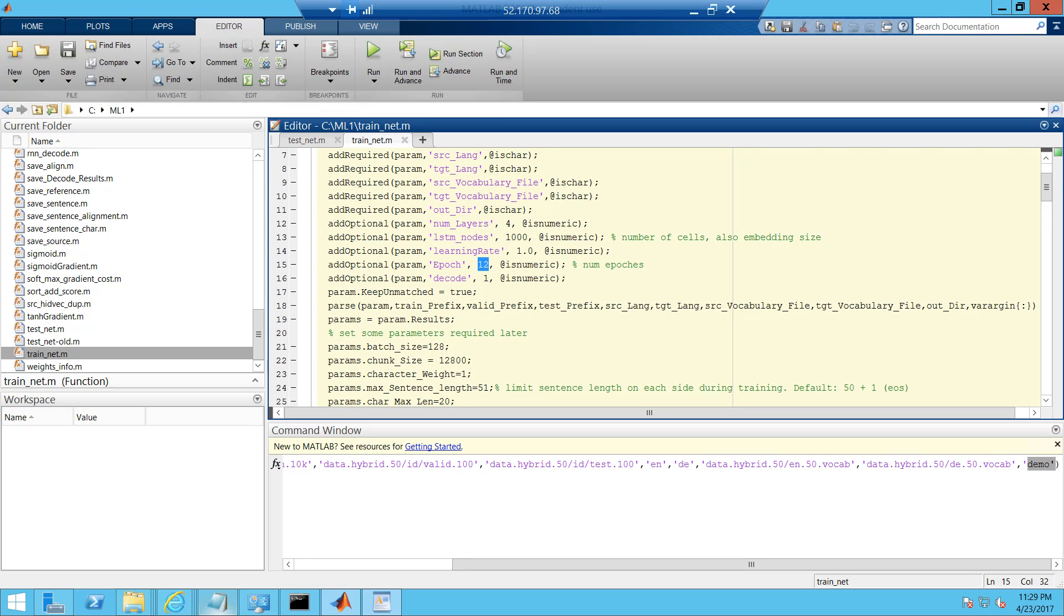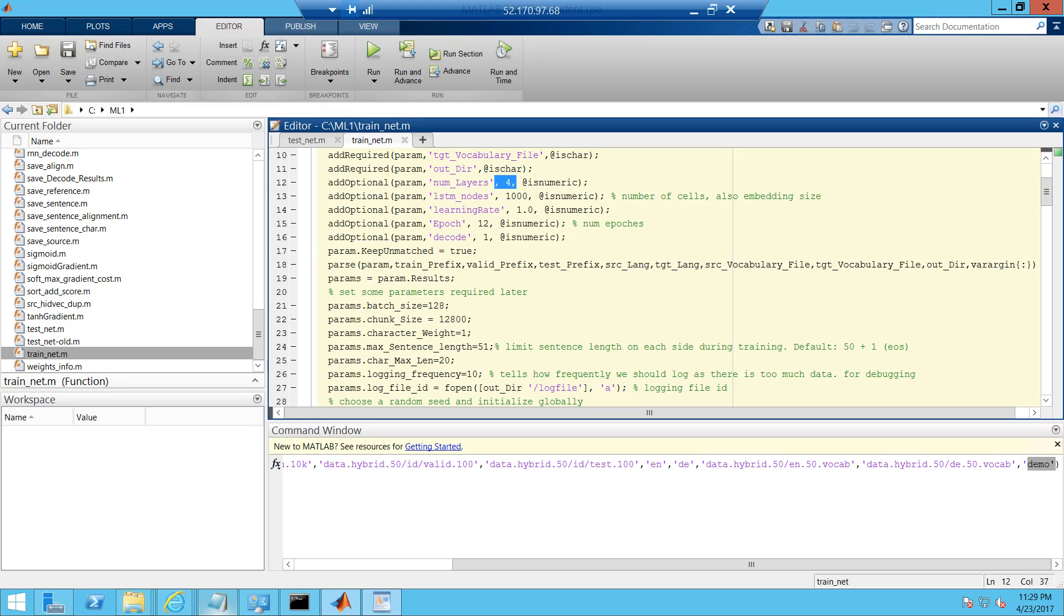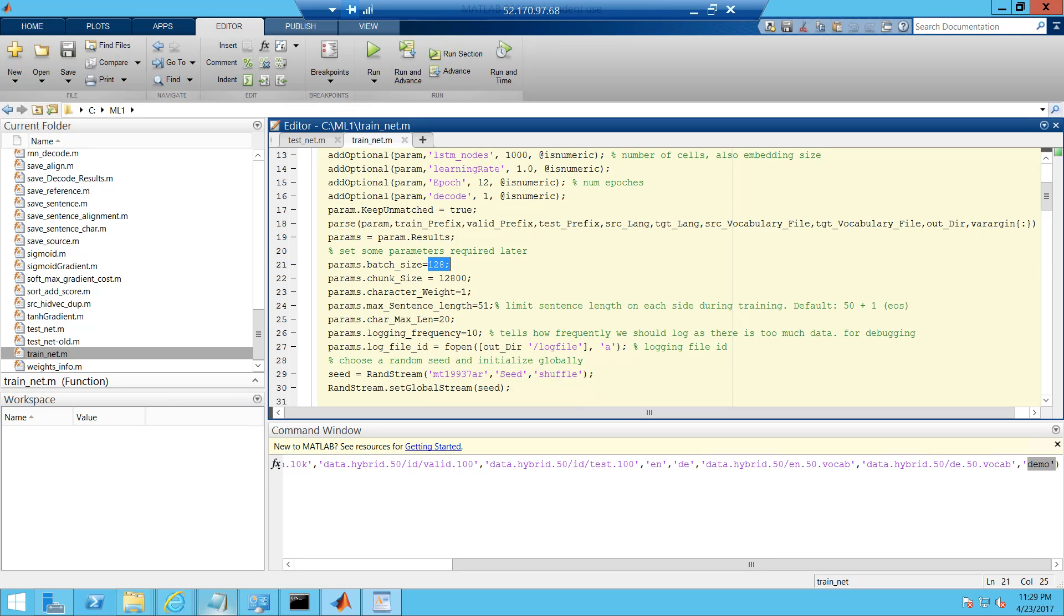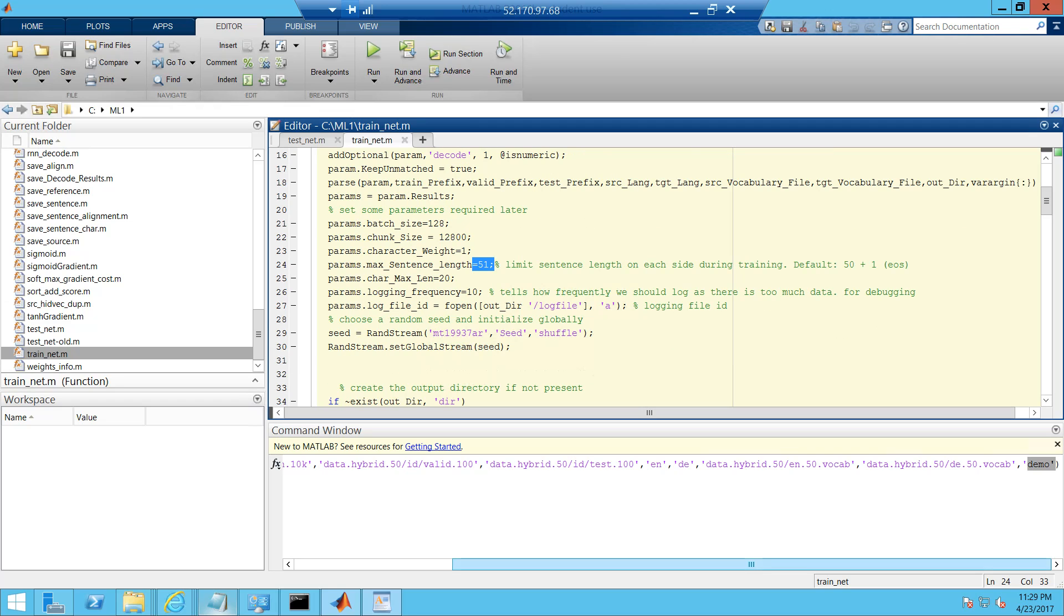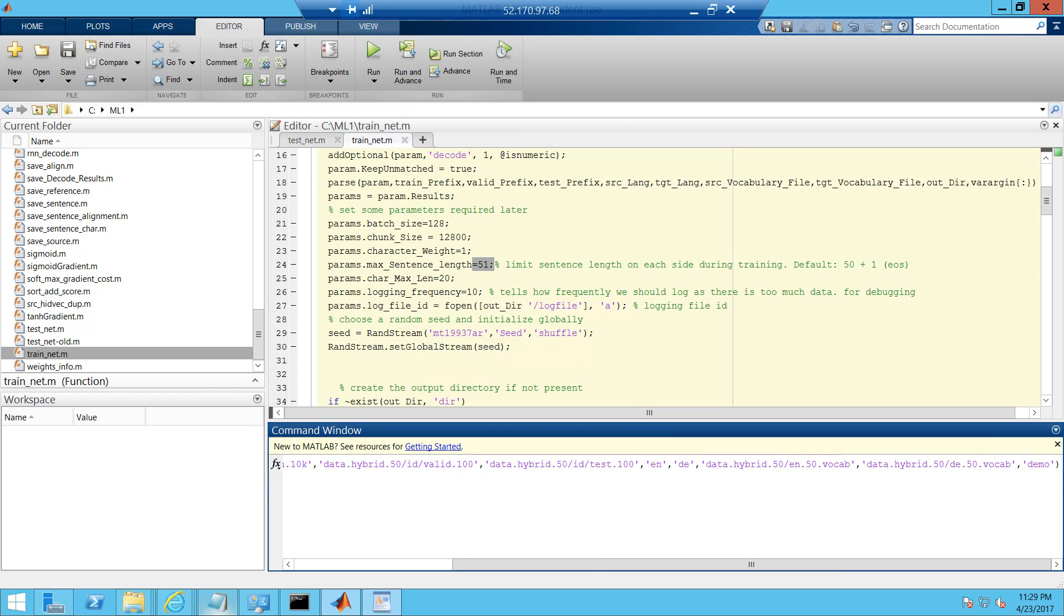You can change the epoch and you can pass it in the command line as it is. You can also change the learning rate, the number of nodes, the number of layers, and also the batch size. How many sentences do you want in a batch? And the character weight, the sentence length. If you want to increase the sentence length, you can also increase the sentence length. If I click on enter.